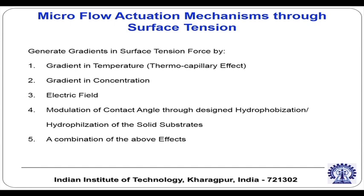For micro flow actuation through surface tension, we generate gradients in the surface tension force. How do we generate gradients in surface tension force? We can generate gradients in temperature, gradients in concentration, use electrical fields to modulate contact angle, through design by hydrophobization or hydrophilization of solid substrates, or a combination of these effects. We will start with how to modulate surface tension with temperature — this is also called the thermocapillary effect.